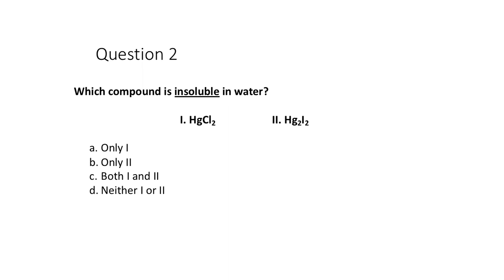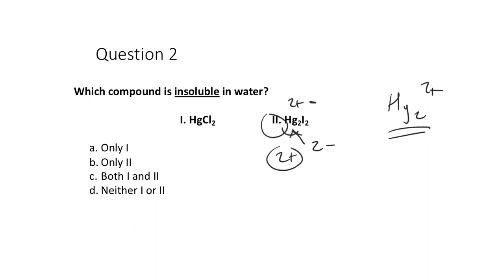Question: which compound is insoluble in water? Hg₂Cl₂ — the mercury(I) salt — is insoluble because Hg₂²⁺ is the exception for chloride. HgCl₂ (Hg²⁺) is not an exception; mercury(II) chloride is completely soluble. You can actually buy both compounds — they're real, stable compounds you can use in experiments — but HgCl₂ has a much higher solubility in water. So only the mercury(I) compound, Hg₂Cl₂, is insoluble in water.